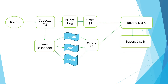In buyers list B, the traffic will get offers which are mid-ticket to high-ticket, or mid-price to high-price. And when they buy, they'll be moved into buyers list A. When the traffic moves into buyers list A, they will be sent high-ticket offers, otherwise known as high-priced items. That is what the Passive Income Profit System looks like.